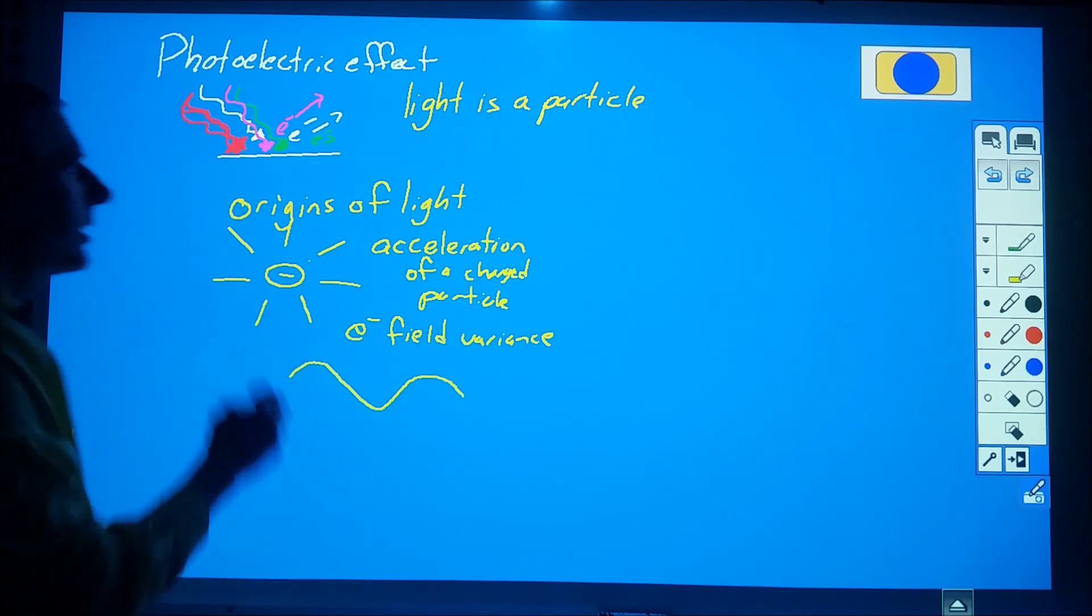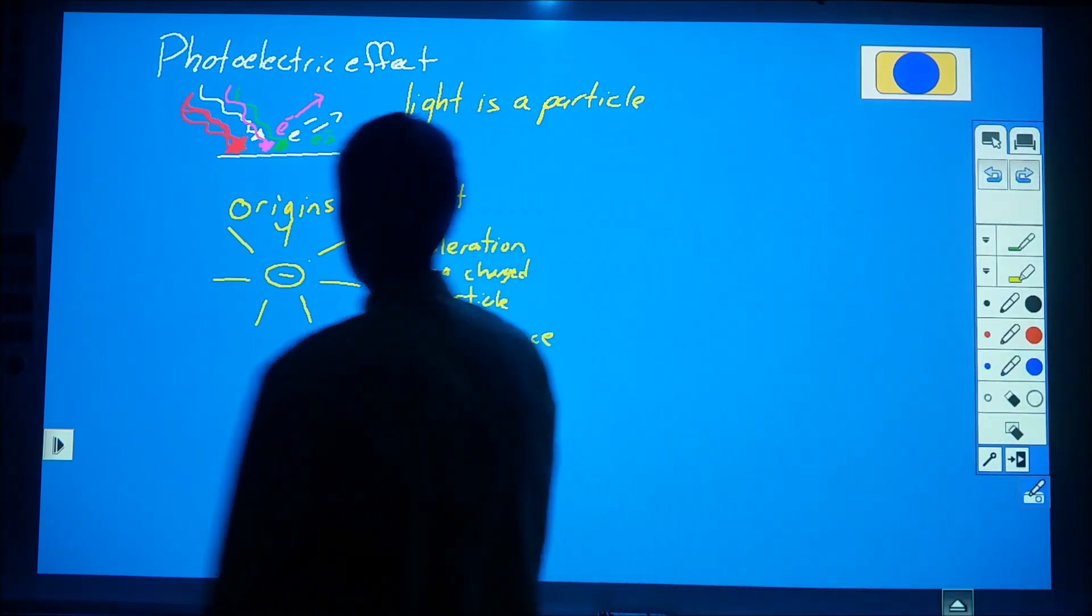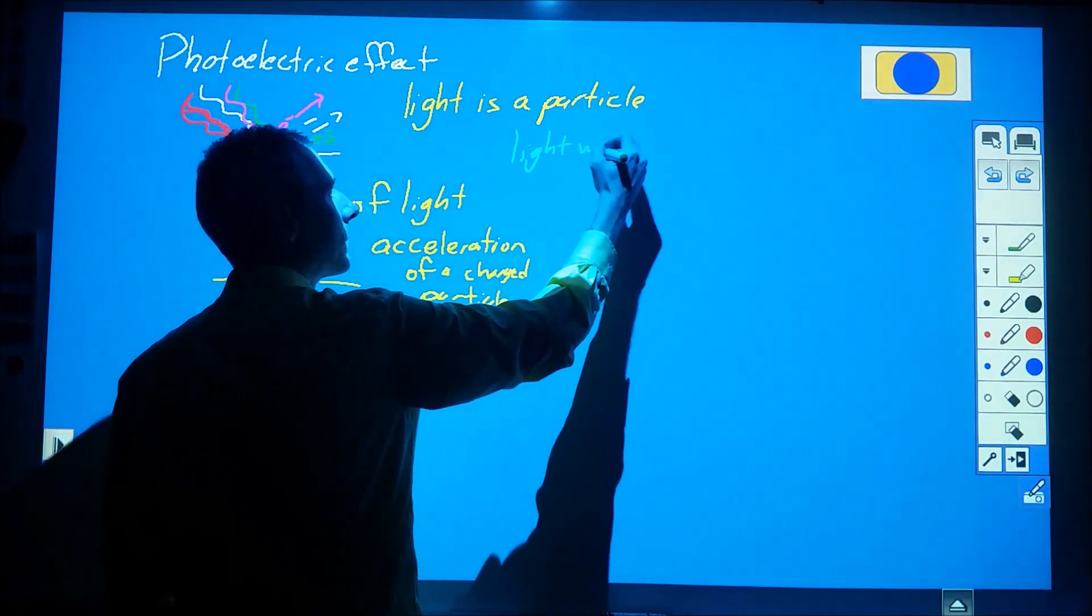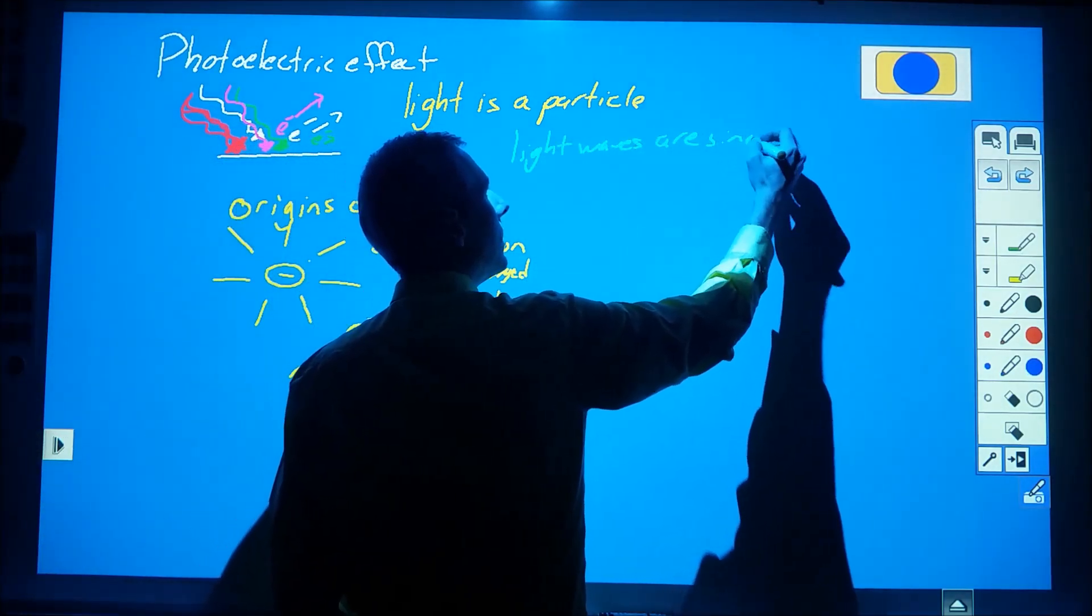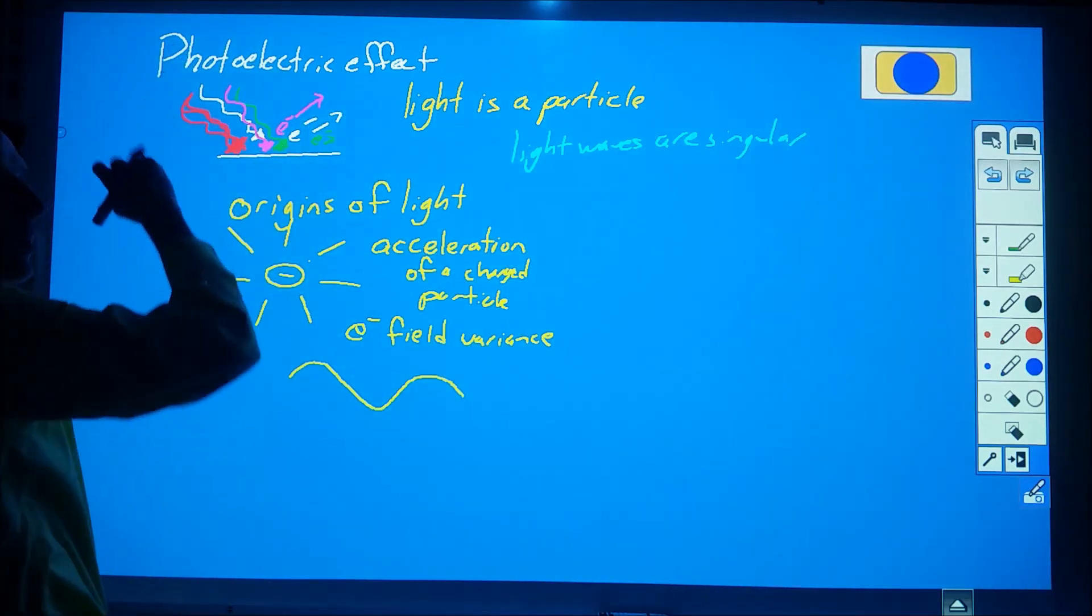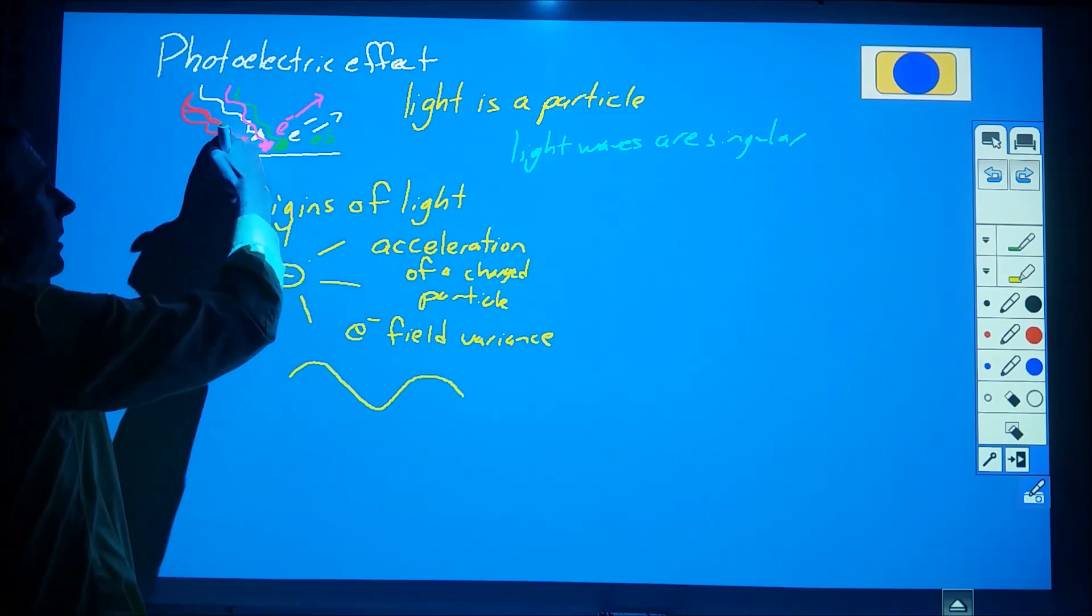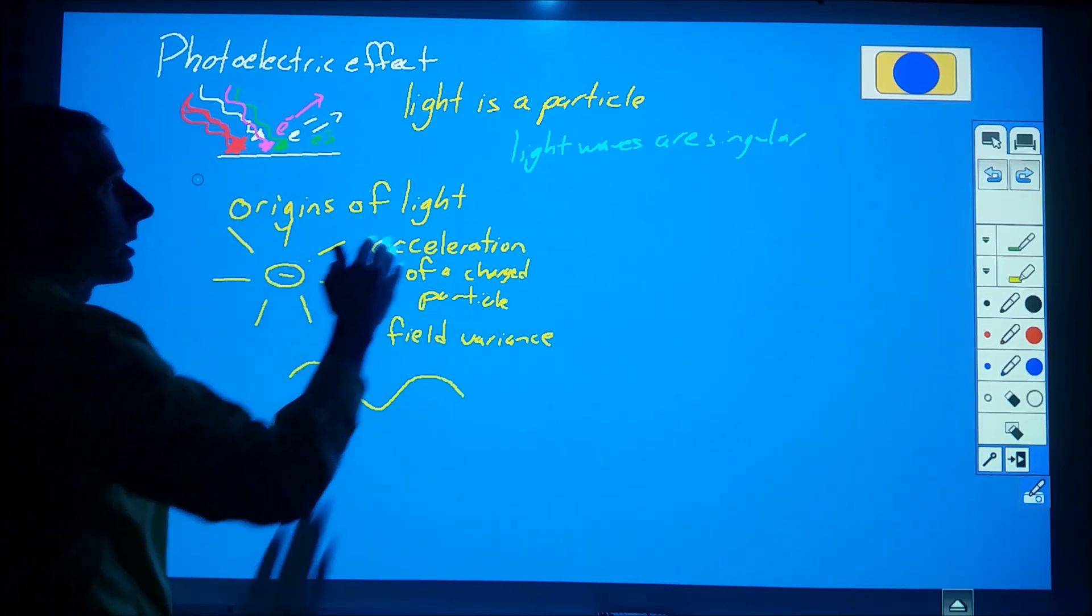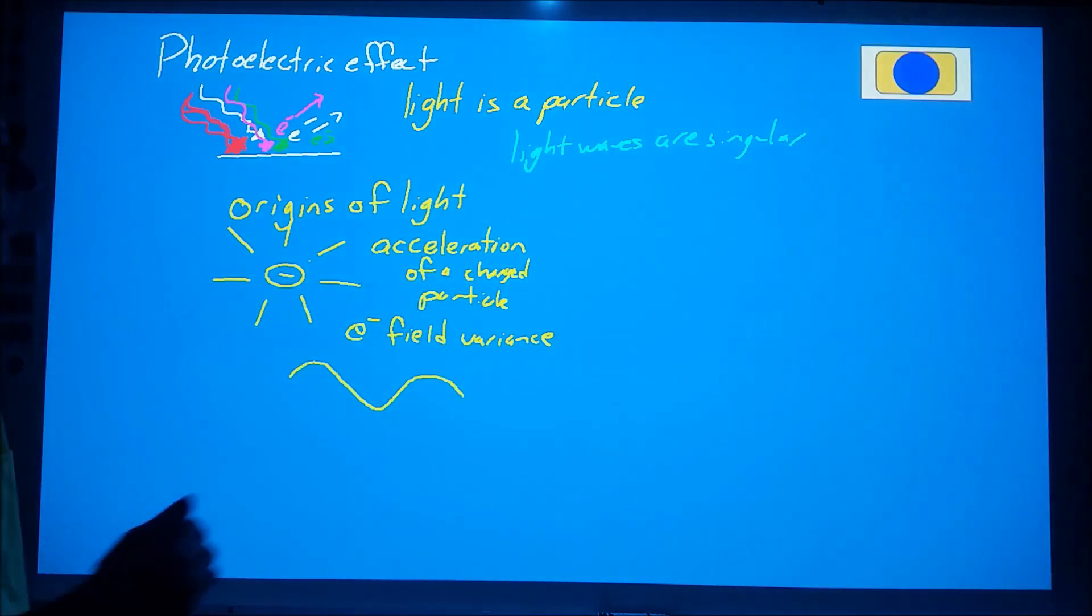So why then do we say that the final conclusion of this is that light is a particle? Well, the assumption or the key idea that many people conclude is that light waves are singular, meaning even if I have a whole bunch of electrons up here that I'm shaking, each electron only produces one light wave, and that light wave cannot combine in totality with other light waves. Because the light waves are singular, we then treat them as particles. And I'm not comfortable with that jump.